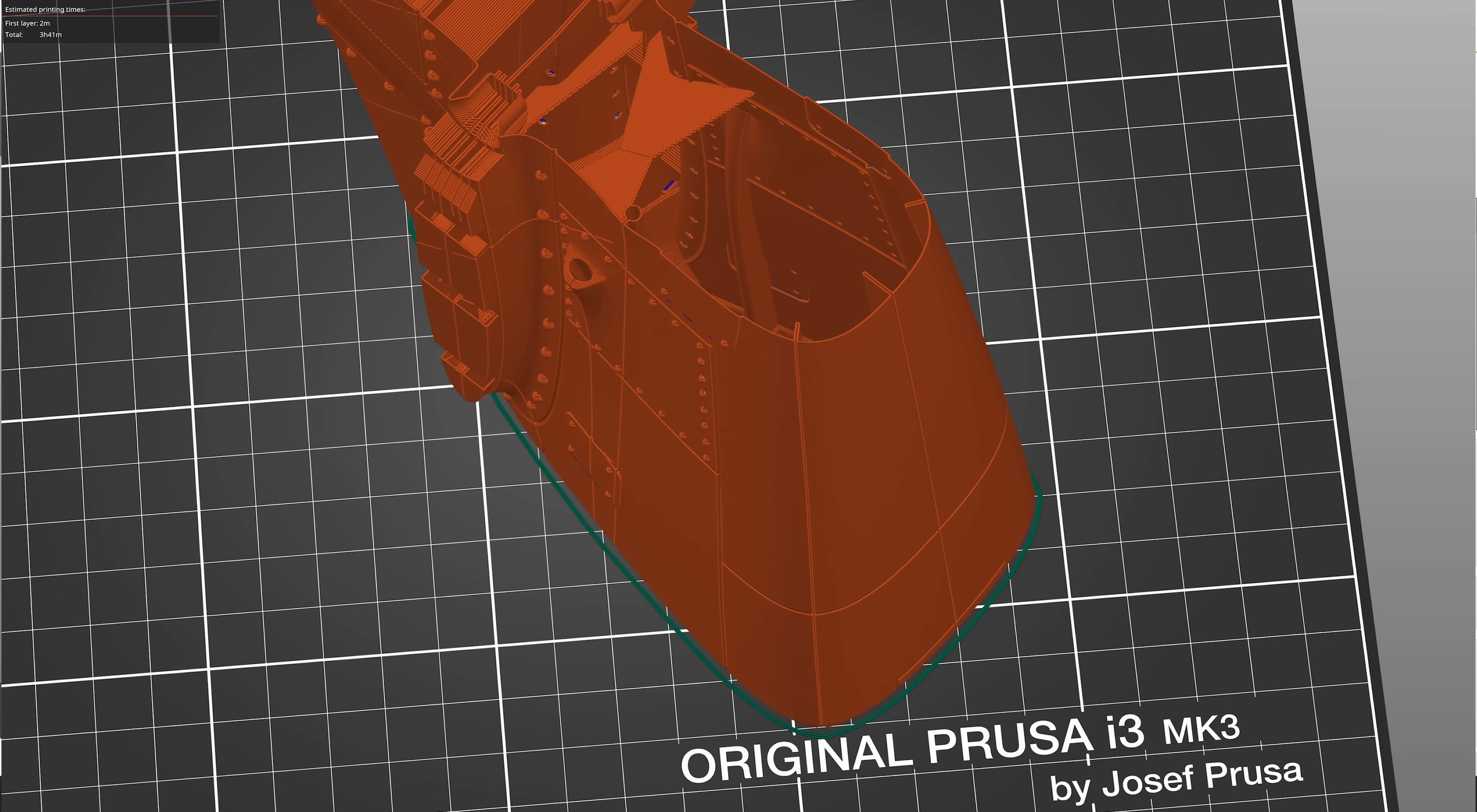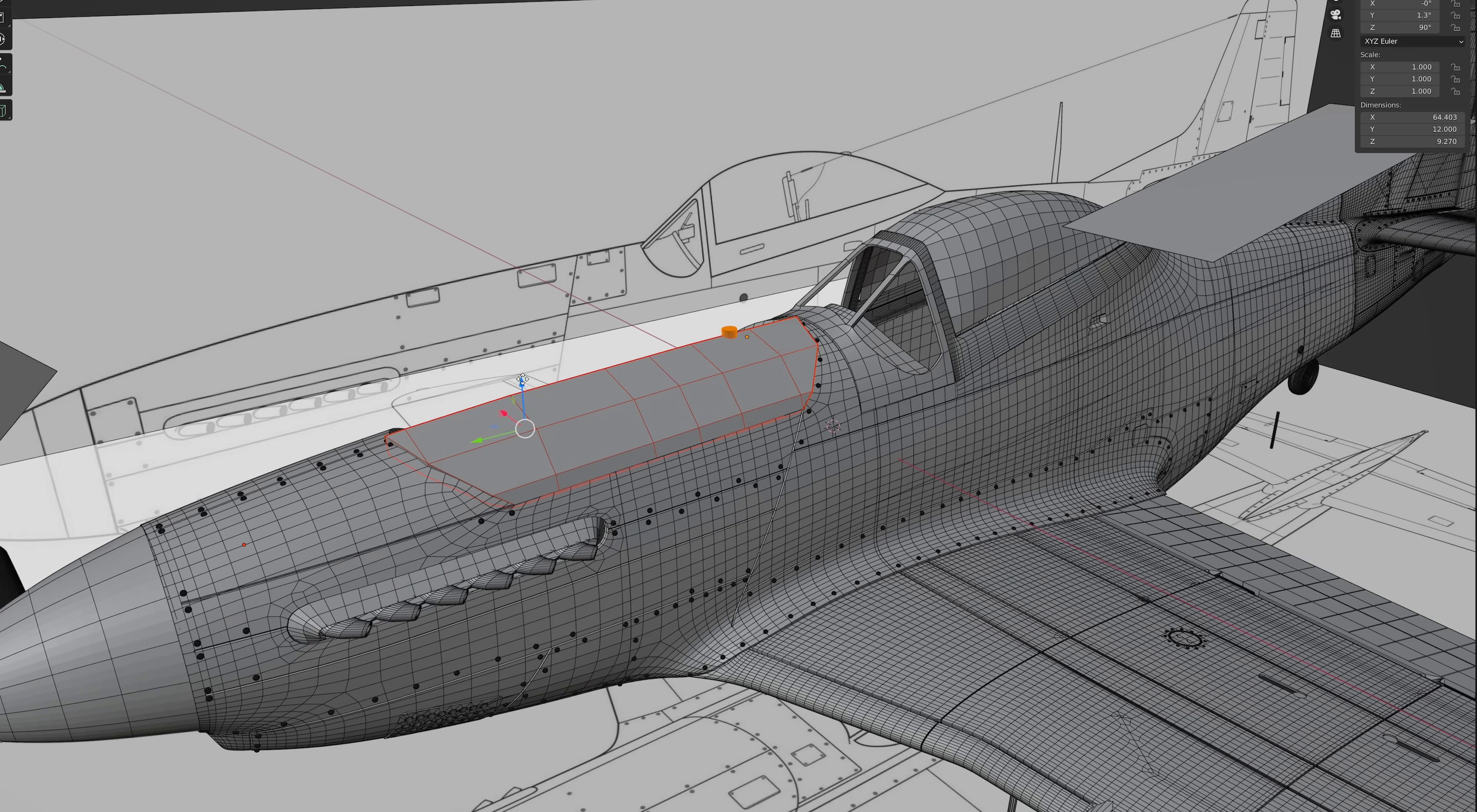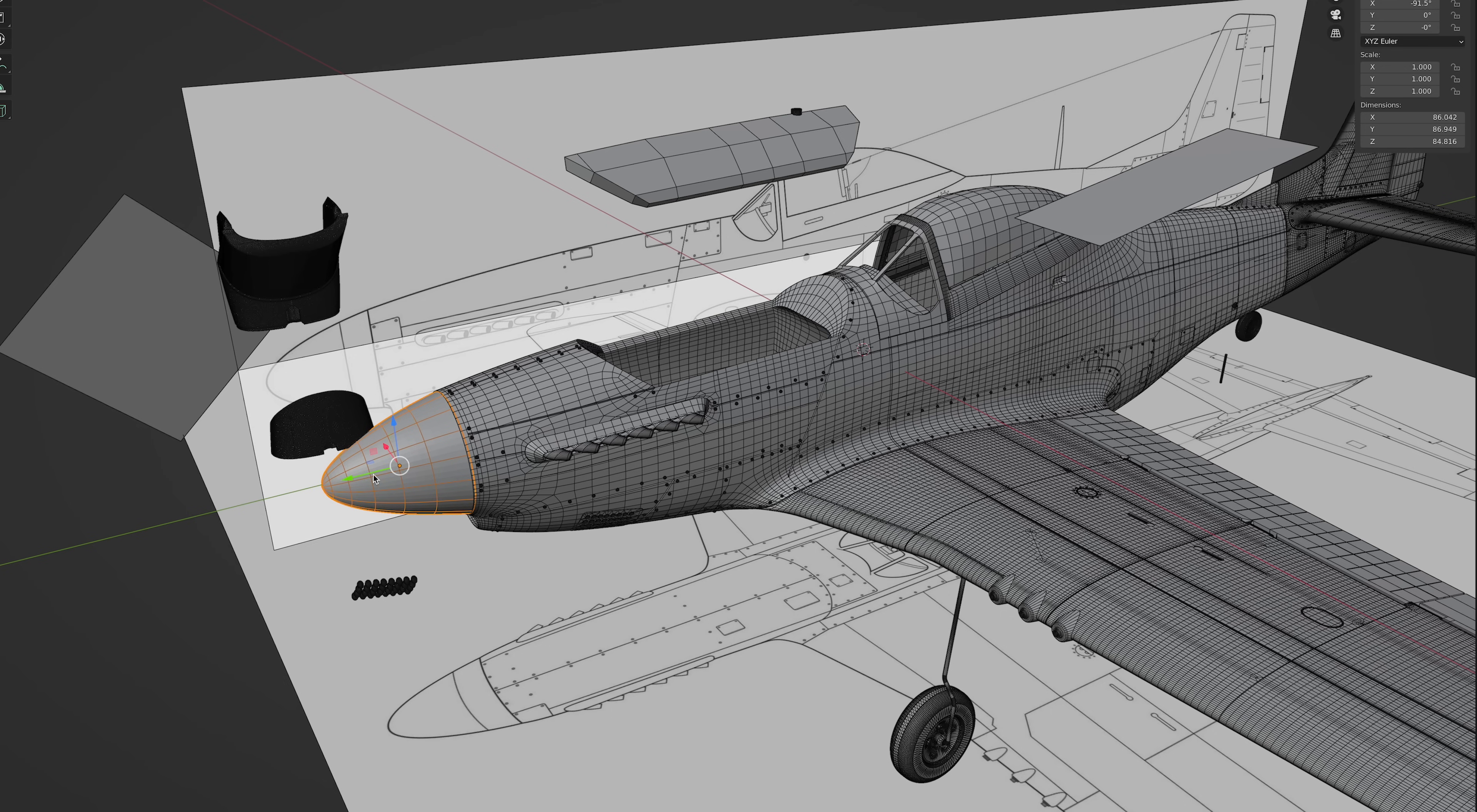Designing the large models from scratch takes about three months. That means one to two months of painstaking modeling. It's a really tedious process. You simply have to spend that time on it. Most of the time we can work with blueprints. We find the right resources, whether it's historical blueprints, fuselage sections, wing sections, photo documentation, and then we just start designing it.